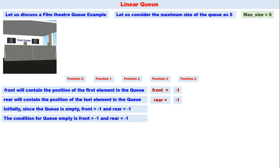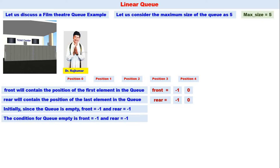A great personality comes to stand in the queue to buy a ticket. Before he arrives, we make front equal to zero and rear equal to zero. That person is Dr. Rajkumar — Annavru — popularly called Annavru in Karnataka, a superstar and great personality of the Kannada film industry. He is at position zero. He is both the first and last person in the queue, so front equals zero and rear equals zero.